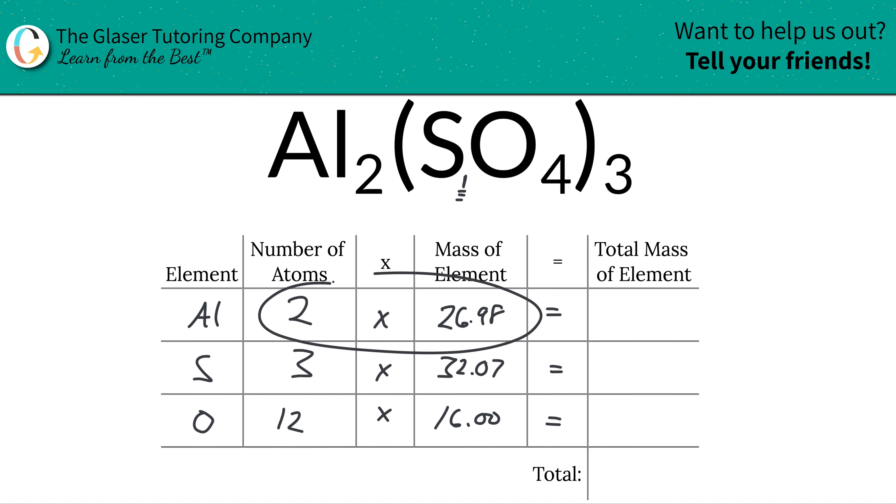Next, we're going to multiply the row across to find the total mass of the element in the compound. So when we take 2 and multiply it by 26.98, we're going to come up with the total amount of aluminum to be 53.96. For sulfur, when we multiply this together, we find the total amount of sulfur about 96.21. And for oxygen, we take 12 and multiply it by 16 and that works out to be about 192.